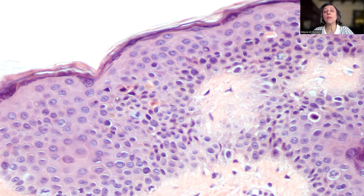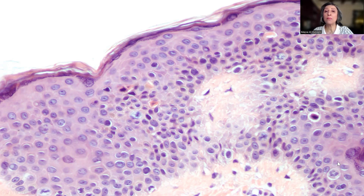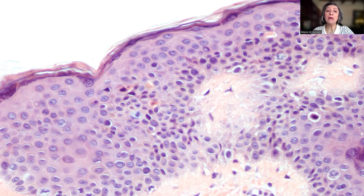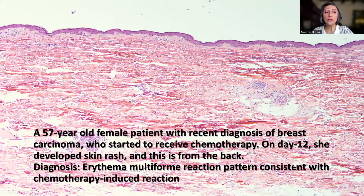Now, if we go back to the history, the only trigger or injury the patient was exposed to in the last 10 days before developing the rash was chemotherapy. This is the typical appearance of chemotherapy-induced rash, or chemo rash. Many people would not think that chemotherapy would induce an erythema multiforme-like reaction in the epidermis, but it does — and this could result in withholding the chemotherapy or even changing the regimen. The final diagnosis was erythema multiforme reaction pattern consistent with chemotherapy-induced reaction.